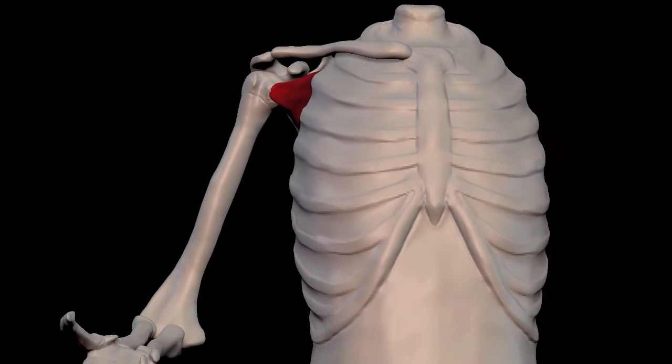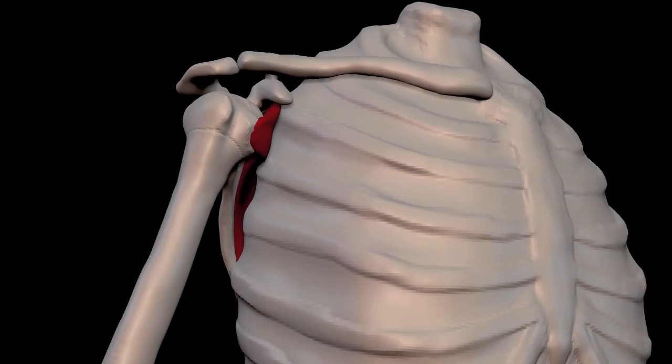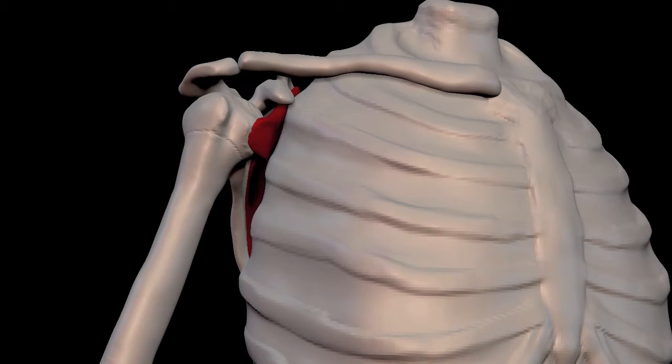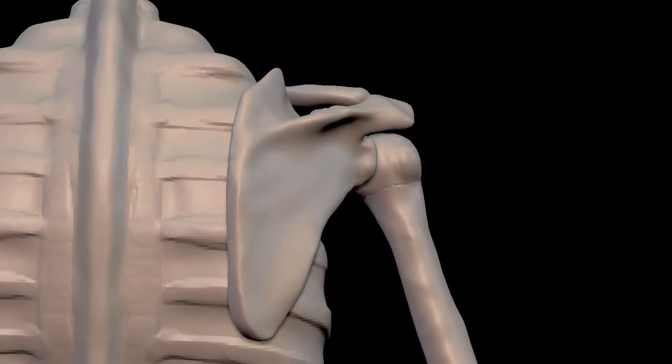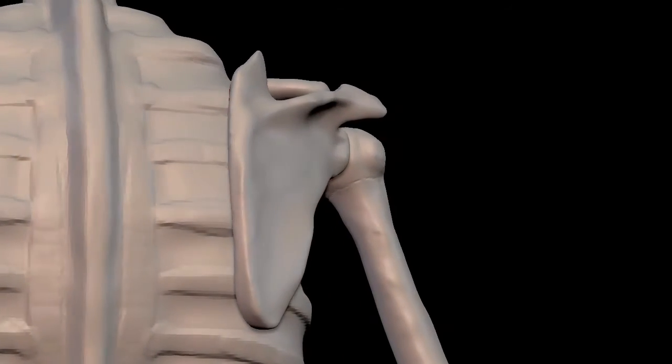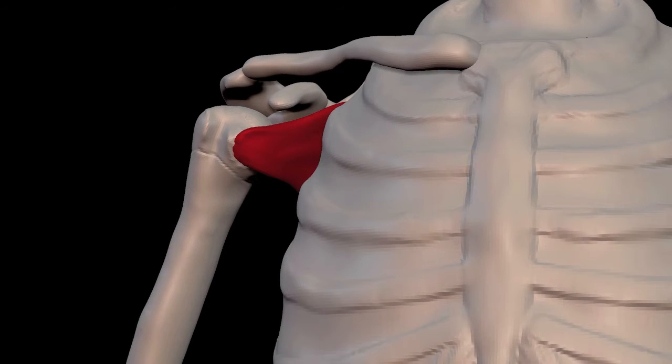The subscapularis is located under the scapula and slides smoothly over the ribcage. It is not attached to the ribcage at all. And we can look at it with the ribcage removed.